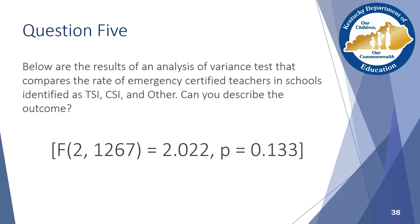Question 5: Below are the results of an analysis of variance test that compares the rate of emergency certified teachers in schools identified as TSI, CSI, and other. Can you describe the outcome? Pause the webinar now and replay when you are ready to hear the discussion.